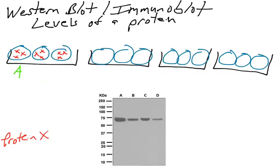The cells in dish A are some type of cells, and the cells in dish B are the same type of cells but have been treated differently. Maybe the cells in dish B have been given a drug, and the cells in dish A don't have the drug. You want to know: does the drug cause levels of protein X to increase or decrease in those cells?